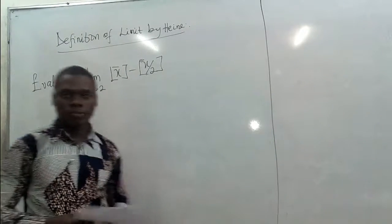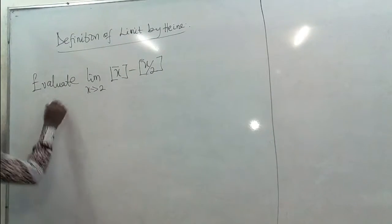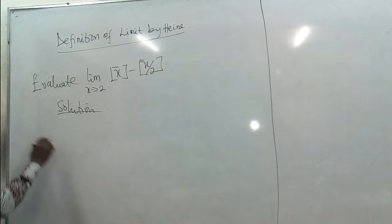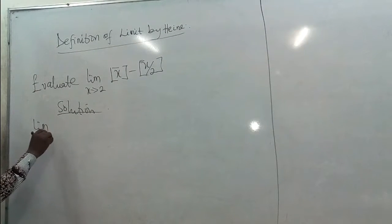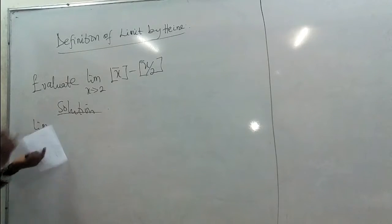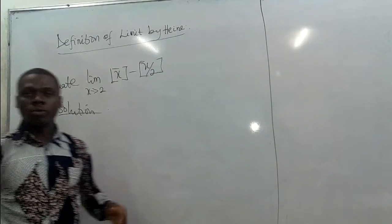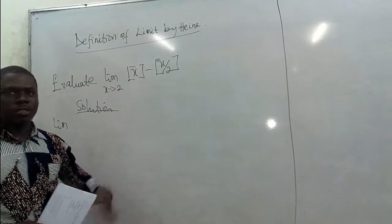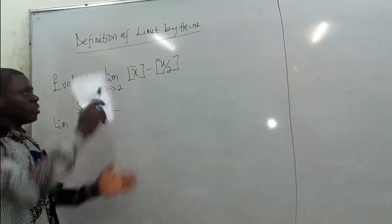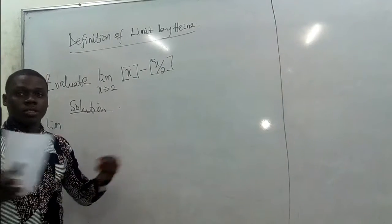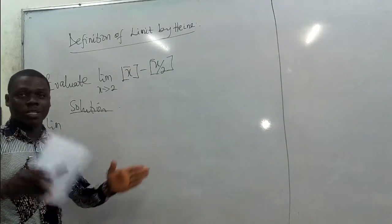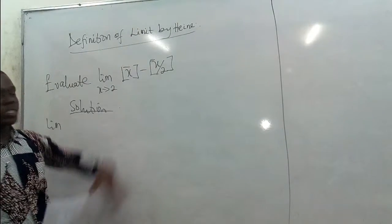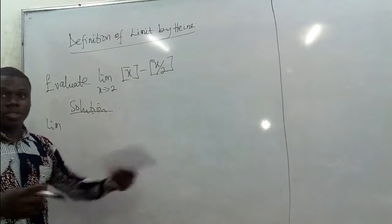So we are evaluating the limits of this. We want to find the solution. To do this, we need to find out whether the right-hand limit and the left-hand limit both exist. When the right limit equals the left limit, then we conclude that the limit of this particular function equals that value.